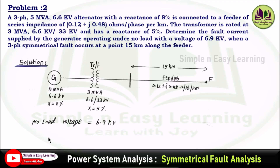The single line diagram will be like this with the no-load voltage given. One thing to understand here is the feeder impedance is given in ohms per phase per kilometer, and the total length is 15 km. So per kilometer the impedance is 0.12 + j0.48 ohm.